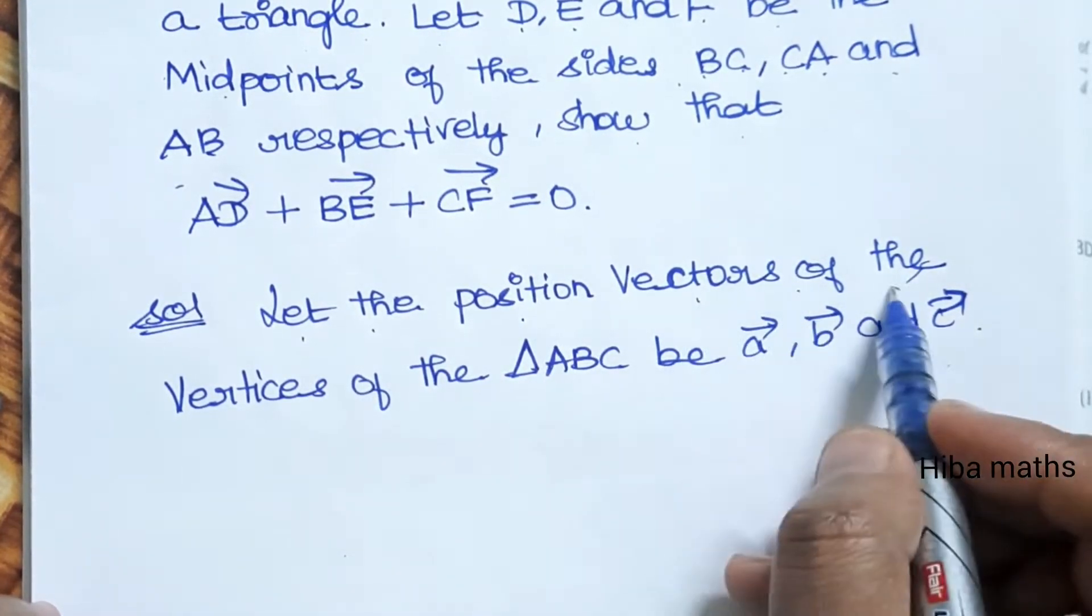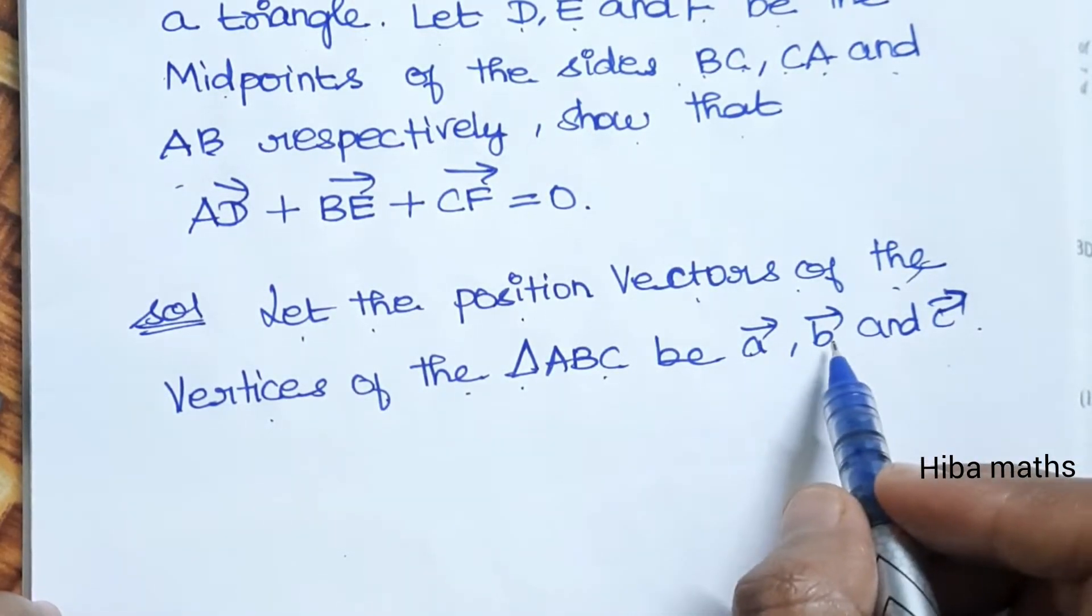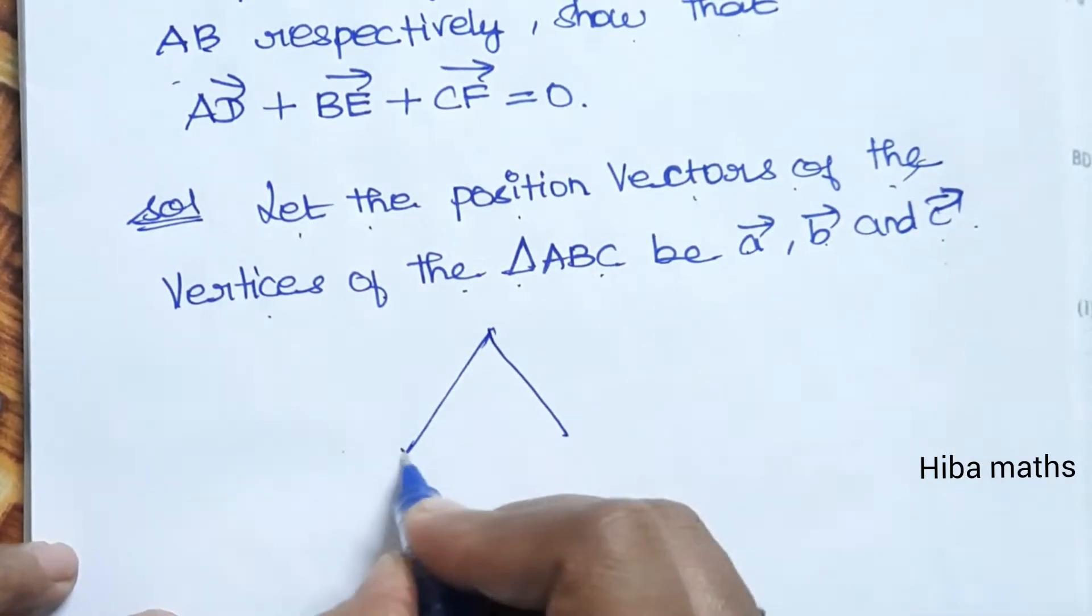Let the position vectors of the vertices of the triangle ABC be A vector, B vector, and C vector. So on the diagram, draw triangle ABC.